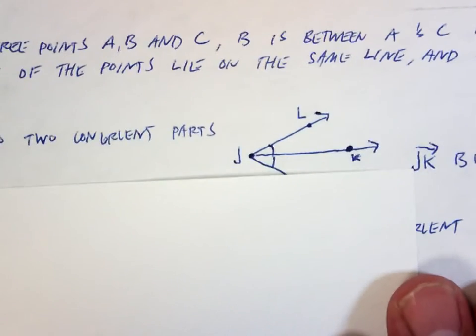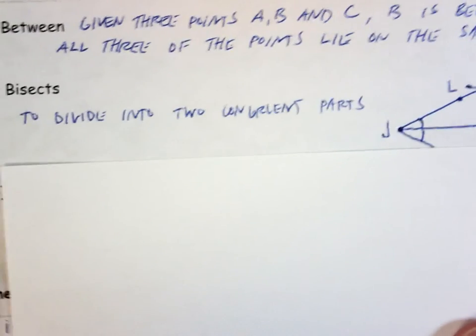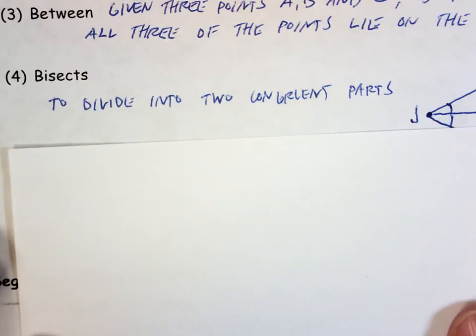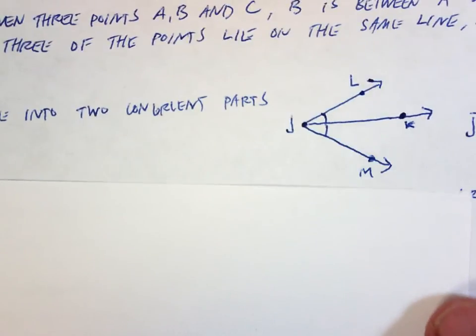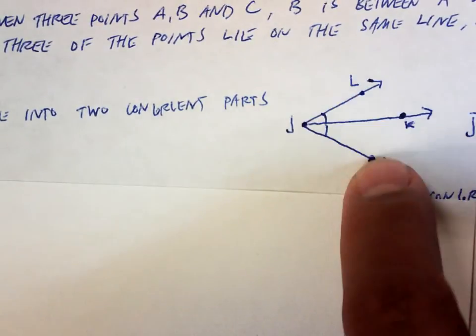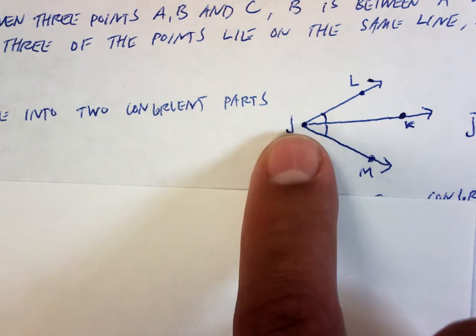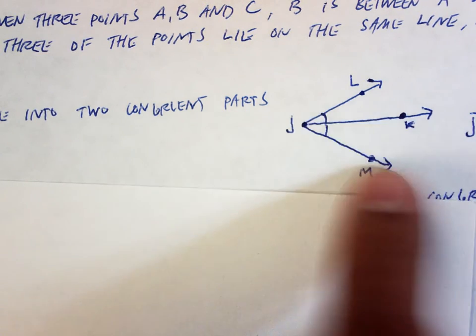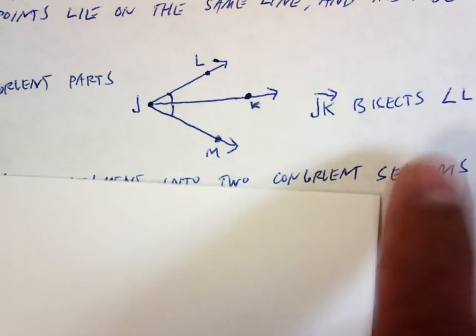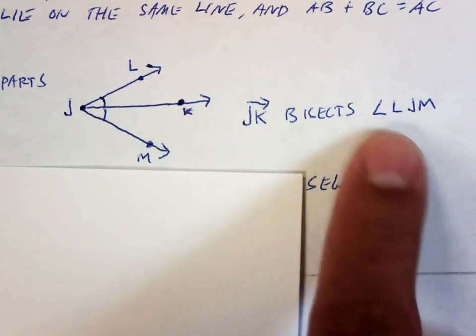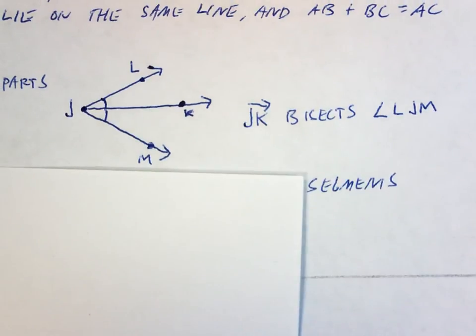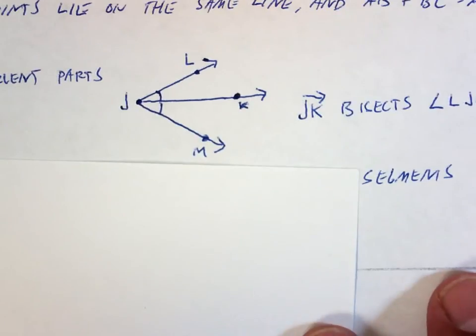Bisects. What does it mean to bisect? It means to divide into two congruent parts. Bisect. It cuts something into two equal pieces. So for example, if I've got an angle, the big angle LJM. This ray, ray JK, bisects angle LJM. So on my picture, I've got ray JK bisects angle LJM. We'll talk more about angles. To bisect, this means to cut into two equal pieces.